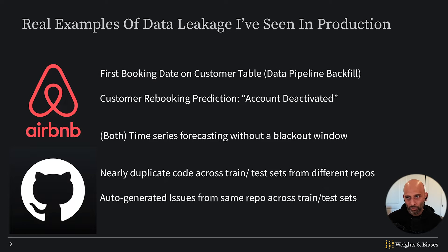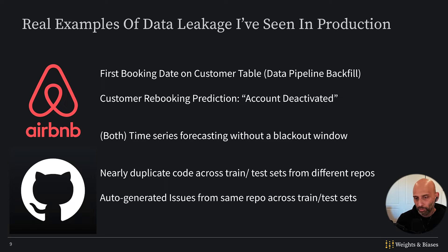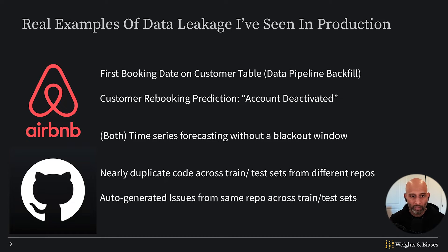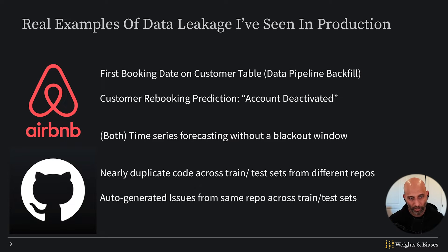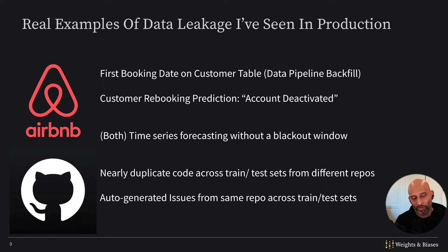This table had a date field on it — it was a snapshot table, so every day it was recreated. At some point, the data was refreshed such that the user table had first booking dates on it prior to the user's first booking. So it leaked information from the future. For example, if I joined Airbnb in June, it would have a first booking date of whenever I made my first booking — let's say December — already populated as of June. So joining on that June data brought information from the future.